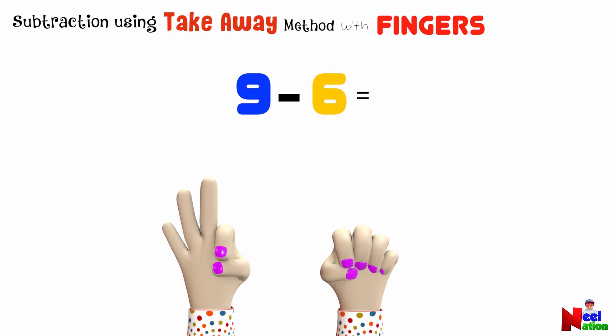How many fingers are we left with? One, two, three. We are now left with three fingers. So, when we take six away from nine, we get three. So easy, isn't it?